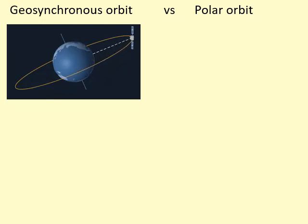There are two types of satellites you need to know about. One is called a geosynchronous or geostationary orbit - geo meaning earth, stationary meaning not moving.